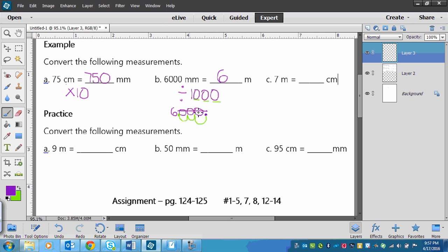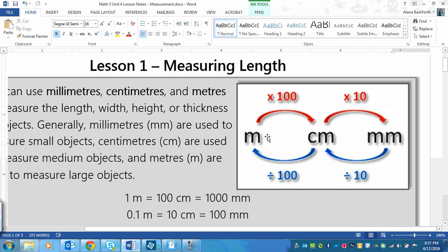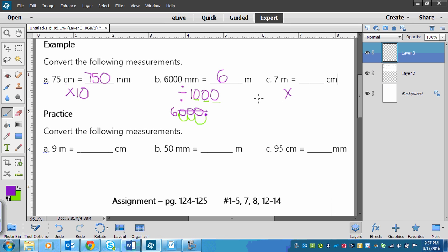Okay, and the last one we've got 7 meters equals centimeters. So this is bigger to smaller, so we're multiplying. And how many centimeters are in a meter? If you didn't know you can check back. There's centimeters to meters. We've got 100, 100. So timesing by 100 this time. So 7 and then a zero and a zero. So 7 meters is equal to 700 centimeters. 6,000 millimeters is equal to 6 meters. And 75 centimeters is equal to 750 millimeters.